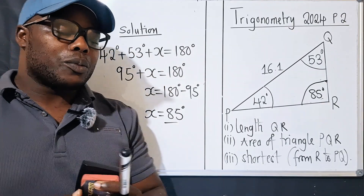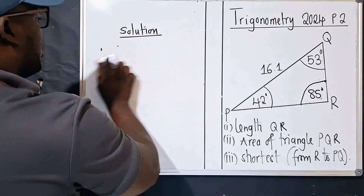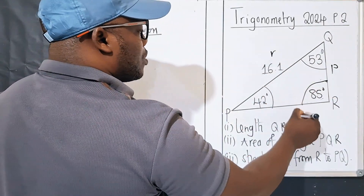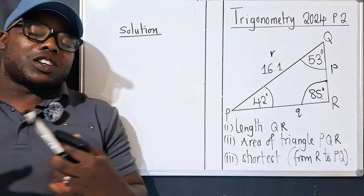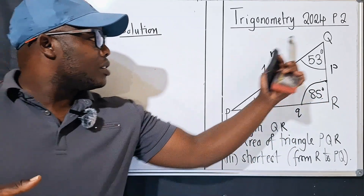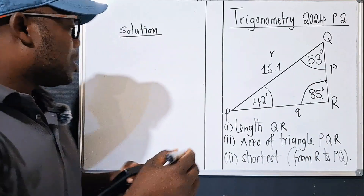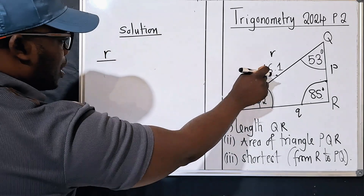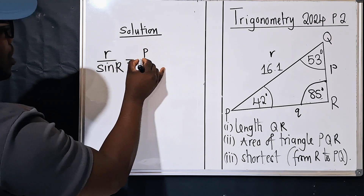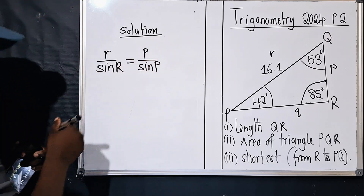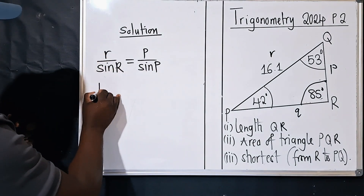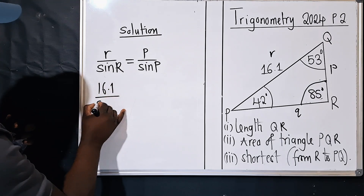We label the triangle: capital P, Q, R for angles and lowercase p, q, r for sides. Remember, lowercase letters represent sides and capital letters represent angles. The sine rule formula is: r over sin R equals p over sin P.